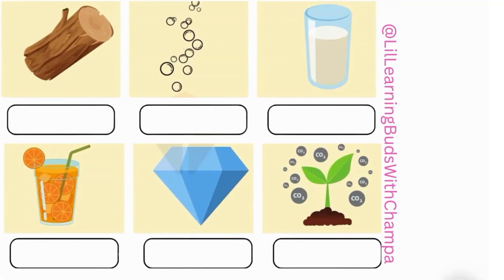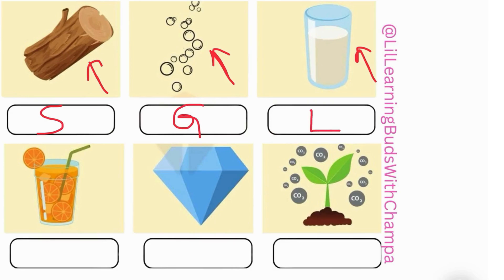Let's play — is it solid, liquid, or gas? What is this? A log of wood — it's solid. How about this? It's gas. How about this one? It's a glass of milk — liquid. How about this one? A glass of juice — liquid. Correct! How about this? It's a diamond — it's a solid. How about this? CO2, which means carbon dioxide — it's a gas.